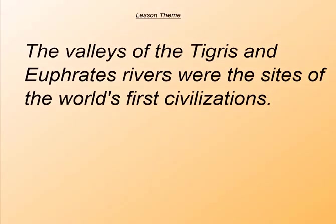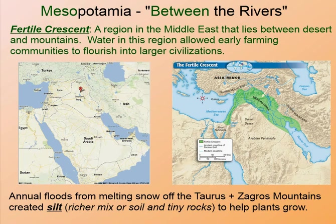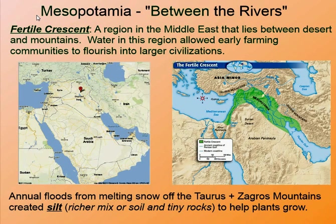It's important to know where they are and what we mean by the Fertile Crescent. First of all, Mesopotamia — this is a Greek term from ancient Greece. Meso means between, if you think about Mesolithic, the Middle Stone Ages. So Meso is kind of middle, or between the rivers.